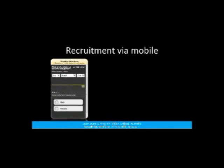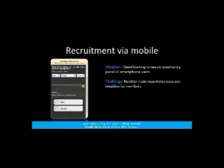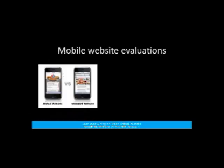This next example is one we recently went through. A client was looking to recruit a community panel of smartphone users. The challenge was making the experience as easy, seamless, and intuitive as possible for potential members to sign up. We optimized our initial recruitment survey to ensure respondents could complete it via desktop or mobile phone, and we were interested in seeing how many people would actually complete from their mobile device. It was a big success — we got a lot of members on the panel, and since then we've seen response rates of about 30% on mobile devices, higher than we were even expecting.